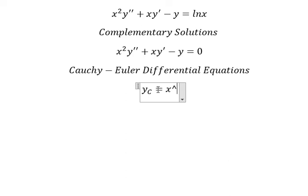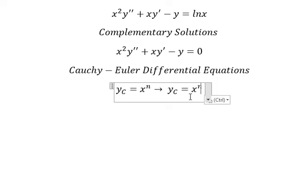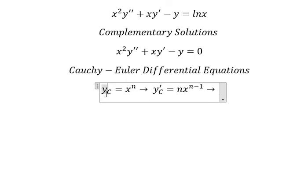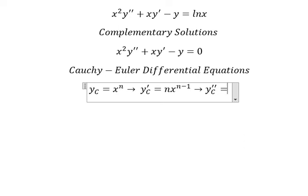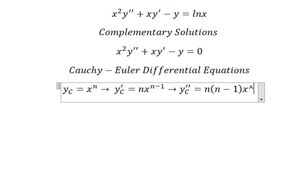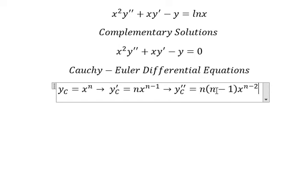Now if we do the first derivative of yc, we will have nx to the power of n minus 1. And if I do the second derivative, we will have n multiplied by n minus 1, and we have x to the power of n minus 2.